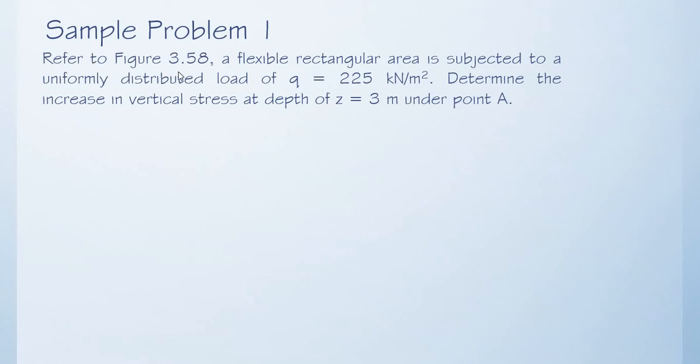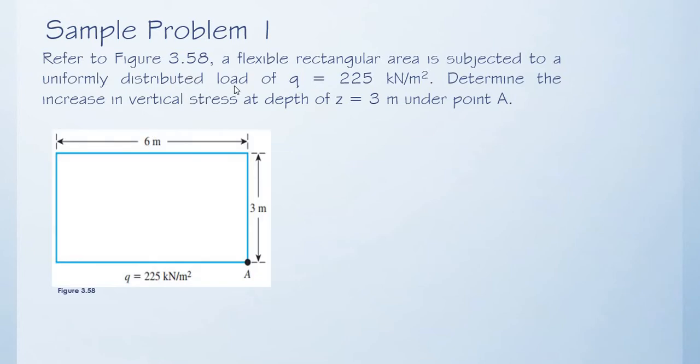Refer to figure 3.58. A flexible rectangular area is subjected to a uniformly distributed load of q equal to 225 kilonewton per meter squared. Determine the increase in vertical stress at depth of z equal to 3 meters under point A.